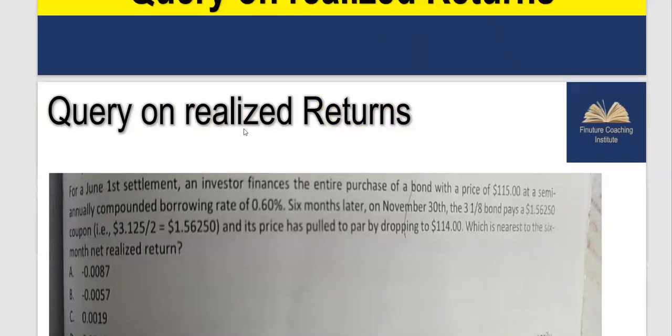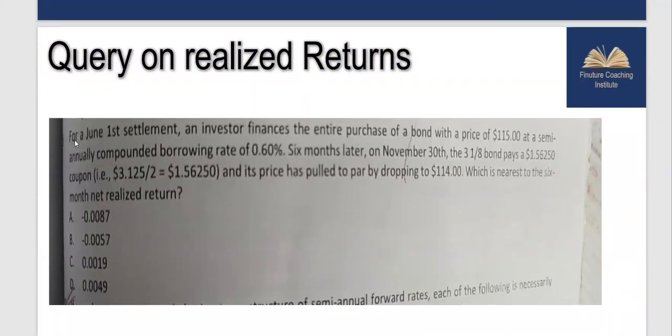Let's have a look at the question. For June 1st settlement, an investor finances the entire purchase of a bond with a price of $115 at a semi-annually compounded borrowing rate of 0.6%. There is an outflow of $115 on June 1st which was financed at $116.